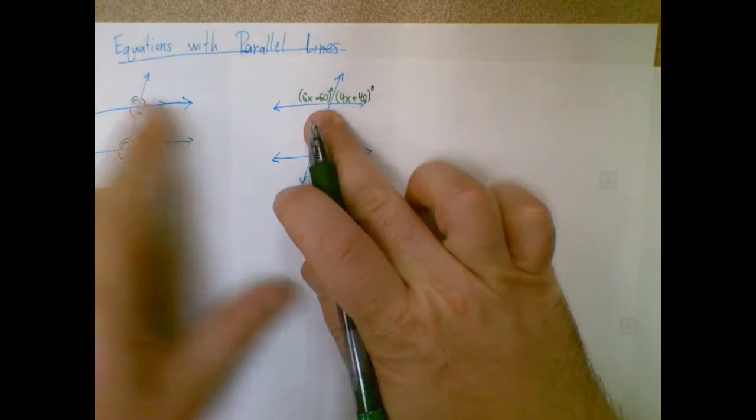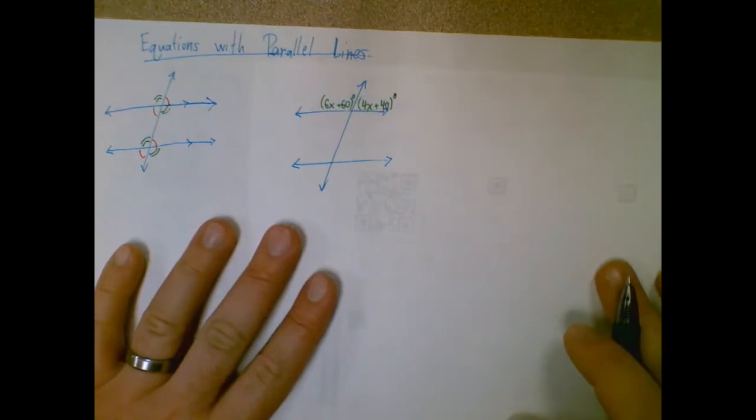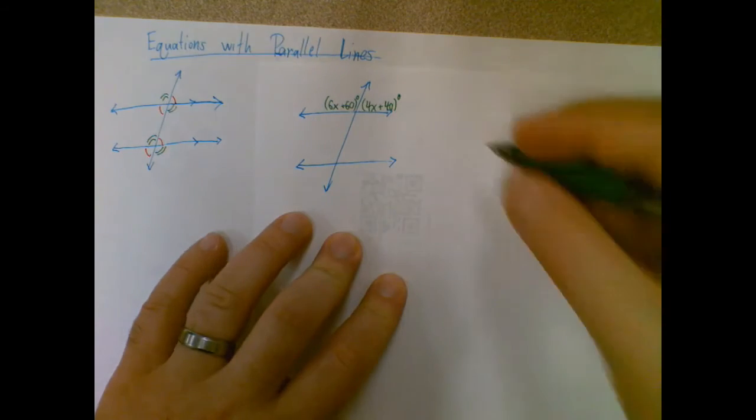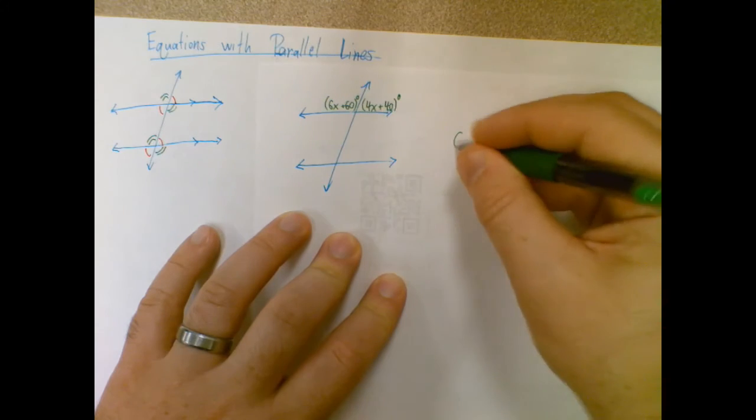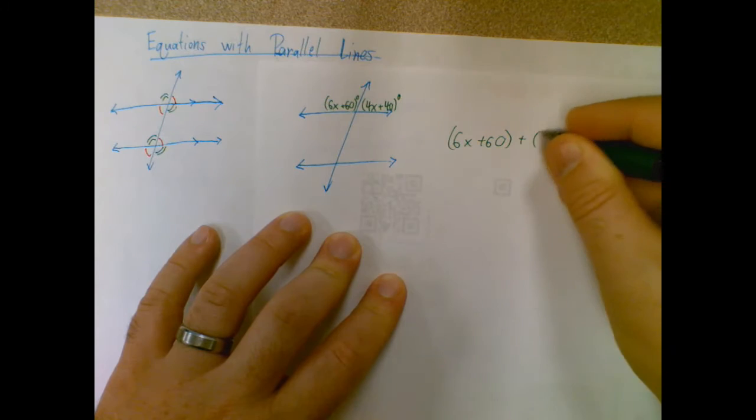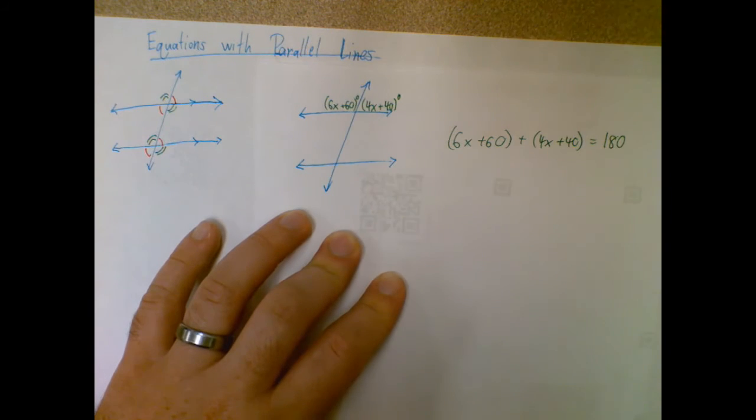In this case, this one's a green one and this one's a red one. Since they don't match, they're supplementary, which means they have to add up to 180 degrees. So I'm going to take those two expressions: 6x plus 60 plus 4x plus 40 equals 180.